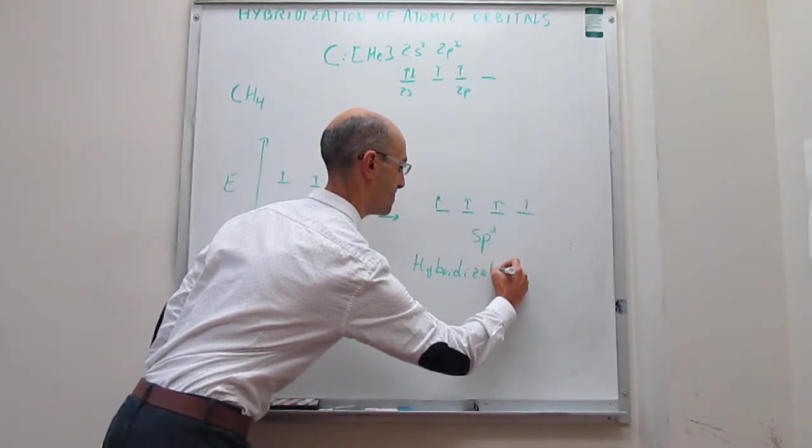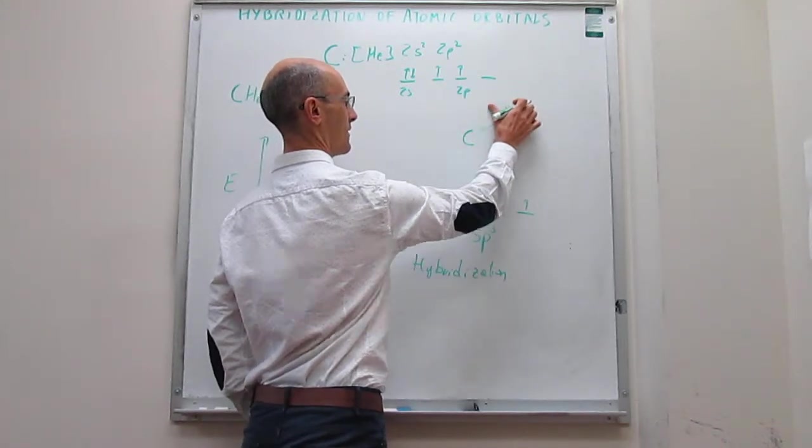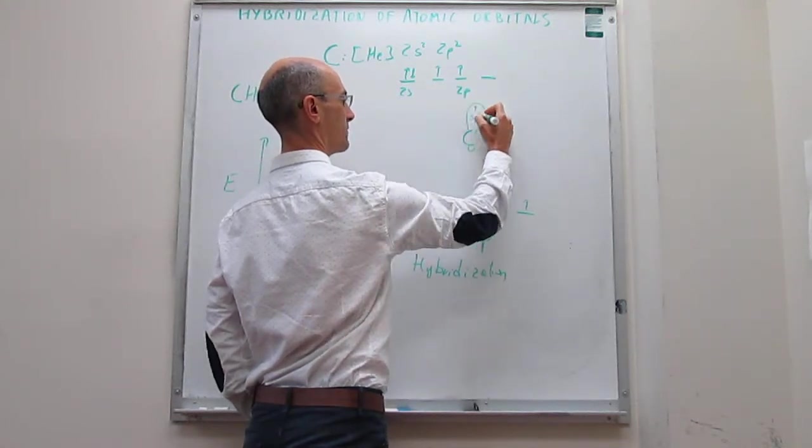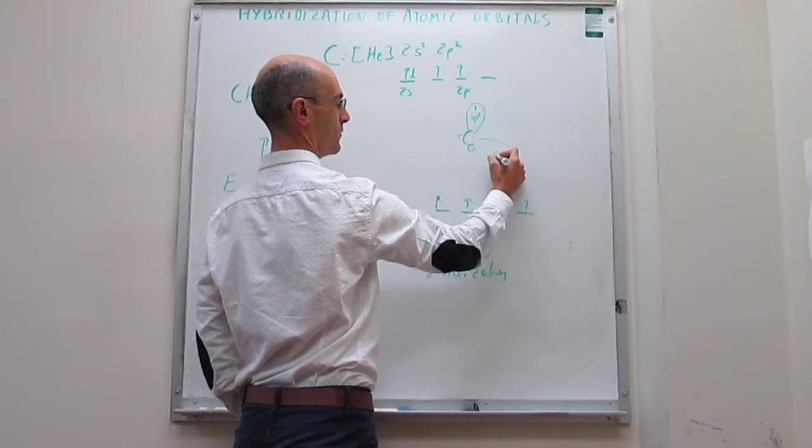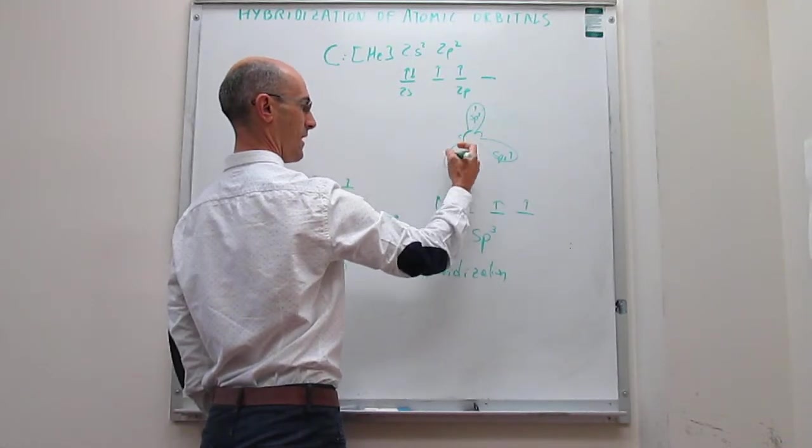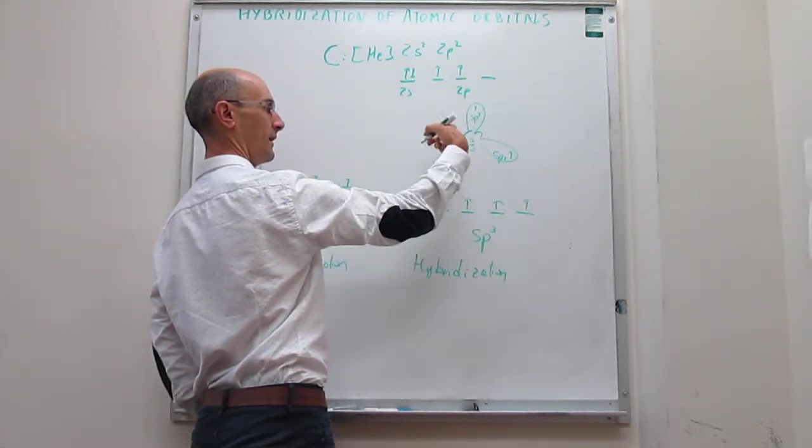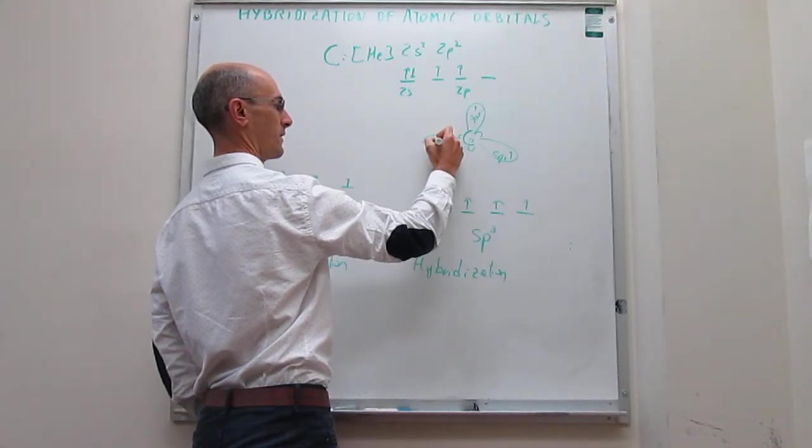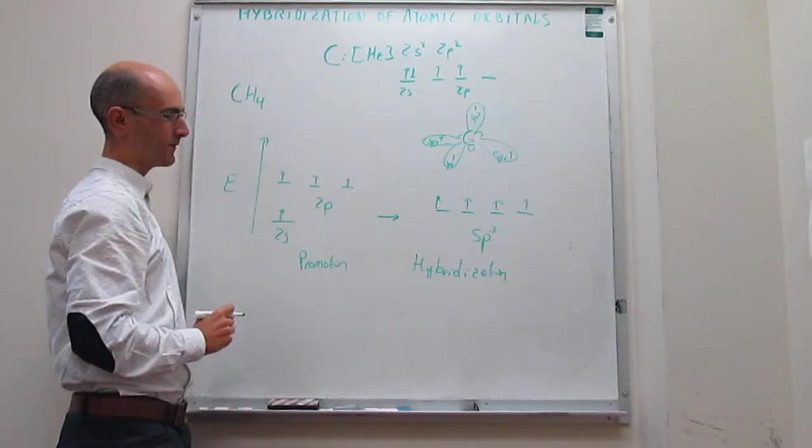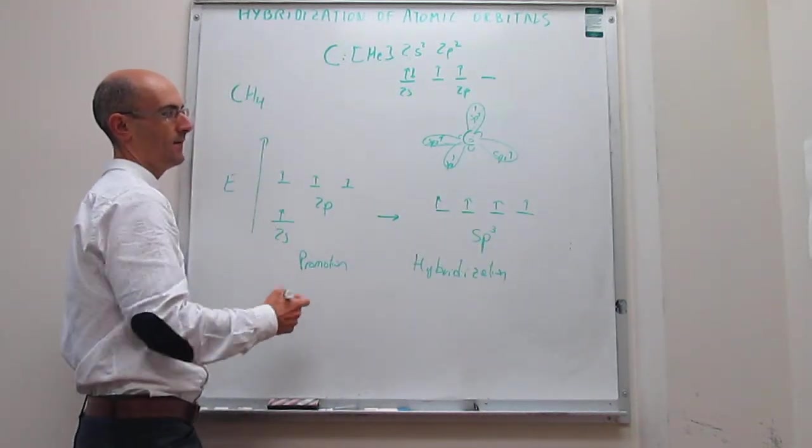Here is an sp³ orbital with one electron. Then you would have another sp³ orbital here with another electron. You would have an sp³ orbital coming out of the plane a little bit with one electron, and then another one going behind the plane with another electron. That is the orbital picture that emerges after you take the natural orbitals of carbon and hybridize them according to the sp³ scheme to generate that system of hybrid orbitals.